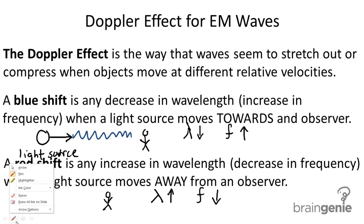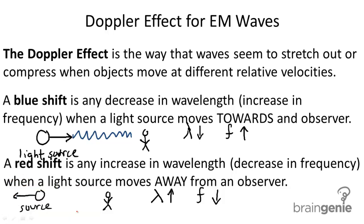Since the frequency is decreasing, the light appears to shift towards the red end of the visible spectrum, so we see something closer to the red end. That's why we call this a red shift.